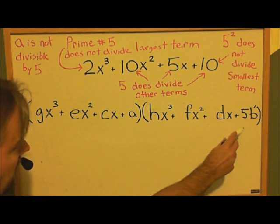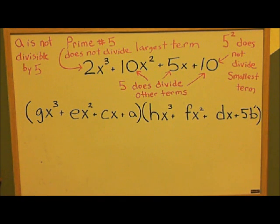Now we could say that a times b prime has to equal 2 to make the 10, but we don't really care about that. We just want to keep track of the 5s. In fact, at the end we're going to prove that this factorization isn't possible, so we don't even need to know what a and b prime actually are.